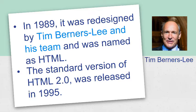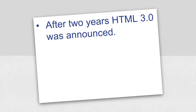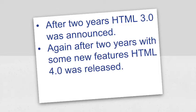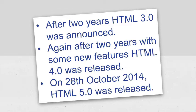The standard version HTML 2.0 was released in 1995. After 2 years, HTML 3.0 was announced. Again after 2 years with some new features, HTML 4.0 was released. On 28th October 2014, HTML 5.0 was released.